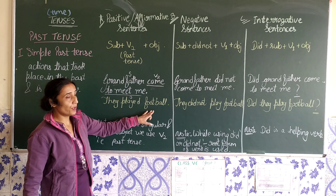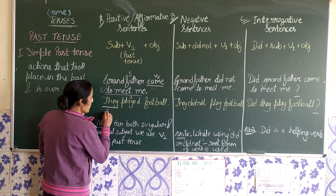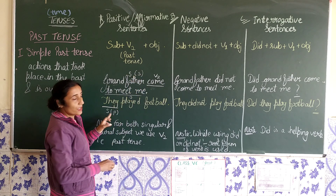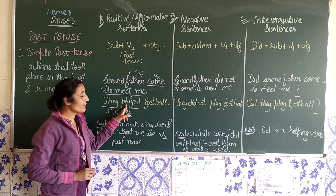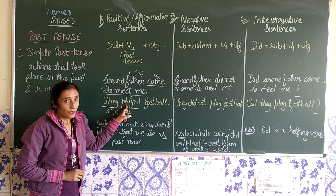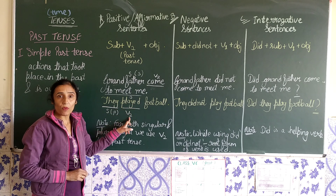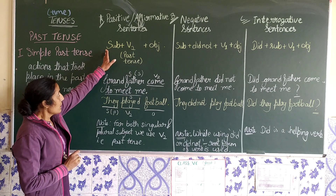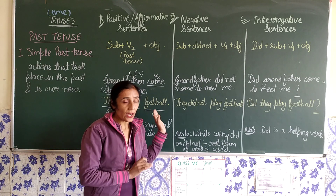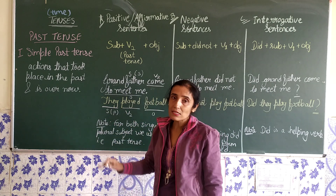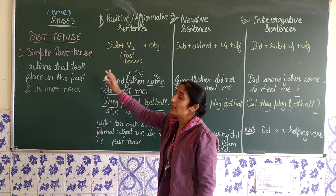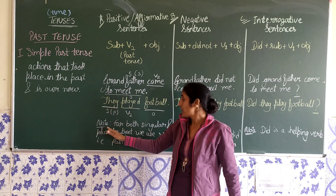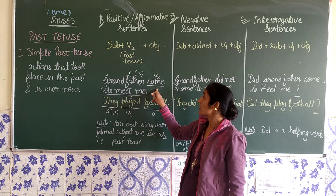One more example: 'They played football.' Here 'they' is a plural subject. With a plural subject also, we have used the verb's second form. The main form of the verb is 'play', and 'played' is the second form. 'Football' is the object. In affirmative sentences we use: subject, then verb's second form, then object. In simple past tense, we do not differentiate between singular and plural subjects — we always use the second form of the verb.